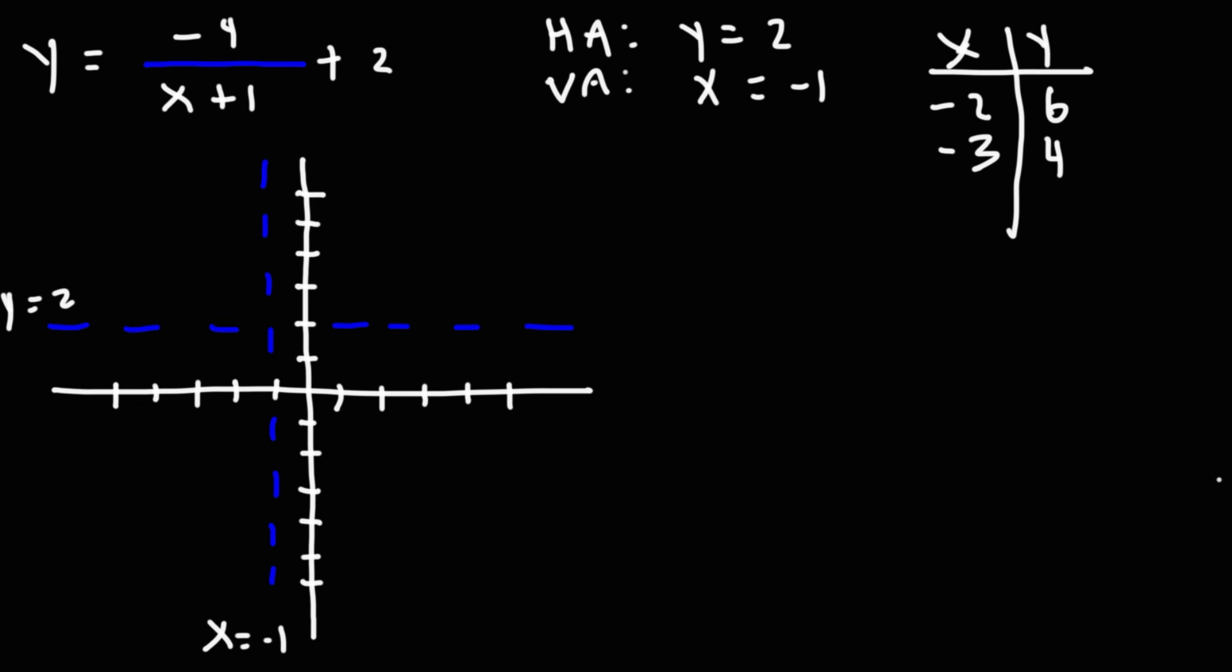Now let's pick two points to the right of the vertical asymptote. We can try the y-intercept where x is 0 and when x is 1. When x is 0, we get 0 plus 1, which is 1 on the bottom. Negative 4 divided by 1 is negative 4 plus 2. That will give us negative 2.